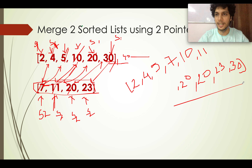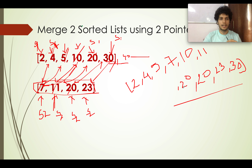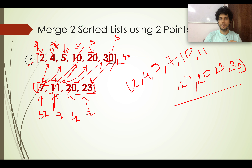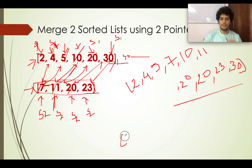Now let's code it up. One important thing: the time complexity of this merge iteration is O(L1 + L2), where L1 is the number of elements in the first list and L2 is the number of elements in the second list.